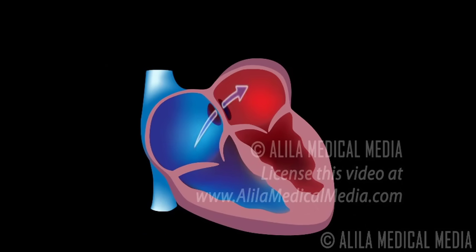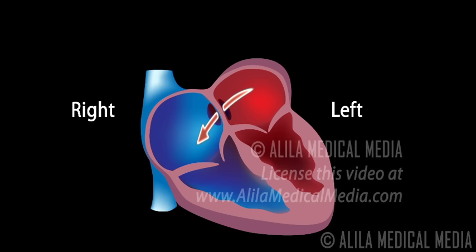However, in as many as one-fourth of all adults, this opening does not close properly, resulting in ASDs. The severity of a defect is measured by a net flow of blood, or a shunt. A shunt can be in either direction. Commonly the condition starts as a left-to-right shunt, due to significantly higher blood pressure in the left side of the heart.